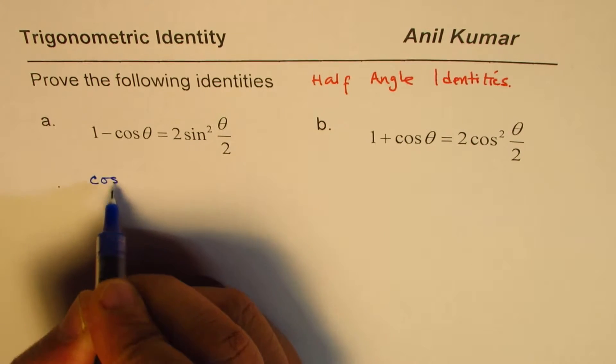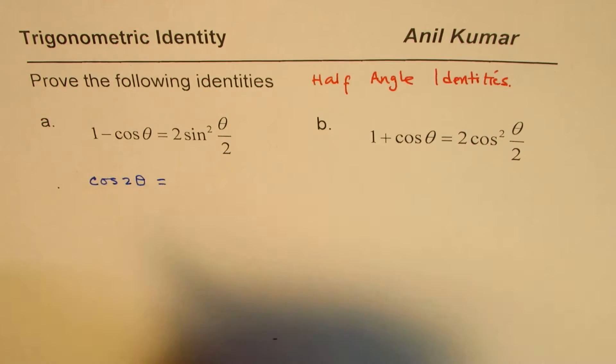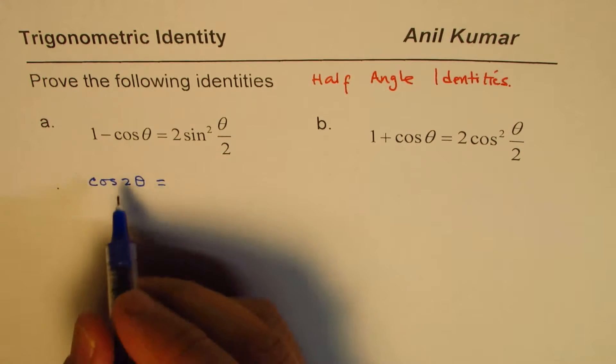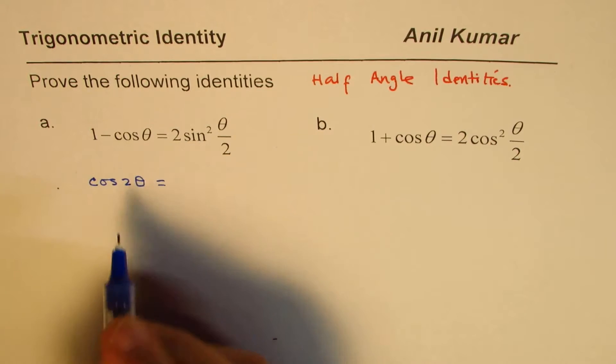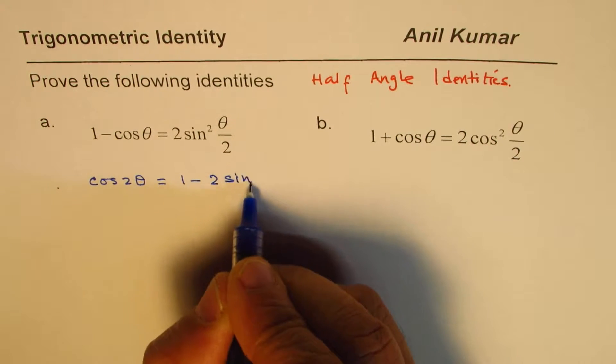So I hope you remember what is cos 2 theta. Now, cos 2 theta could be written in different ways. One way, writing it in terms of sine, is 1 minus 2 sine square theta.